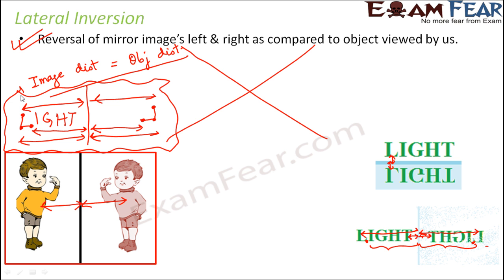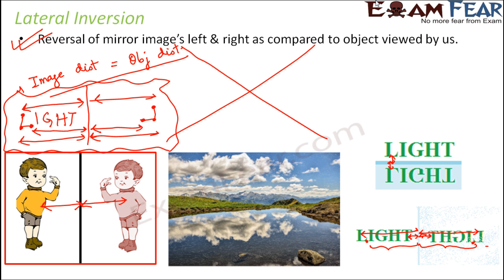We can also see lateral inversion in nature, where the surface of water acts as a mirror. Clouds present at the bottom of the scene appear at the top in their mirror image. Whatever was present up now appears down, and whatever was present down now appears up — that is nothing but lateral inversion.